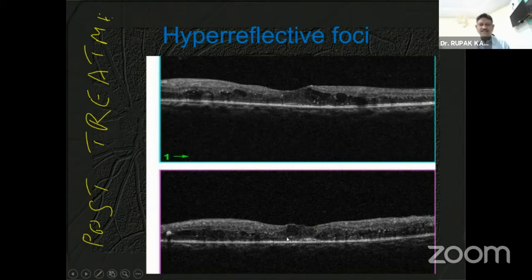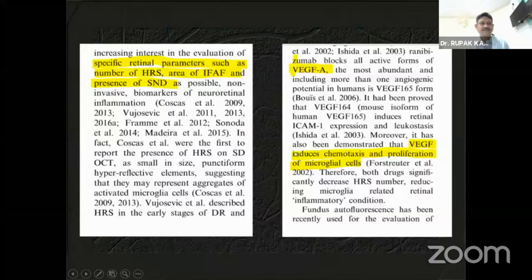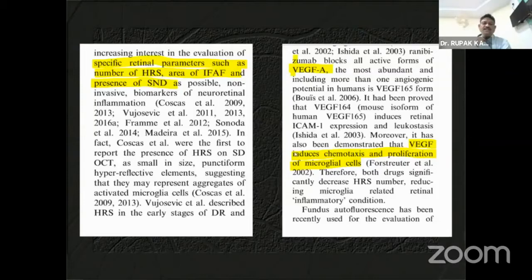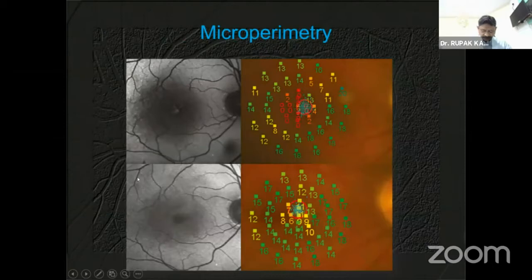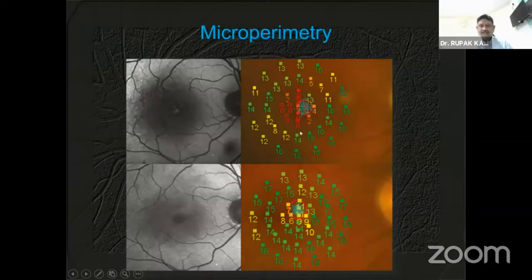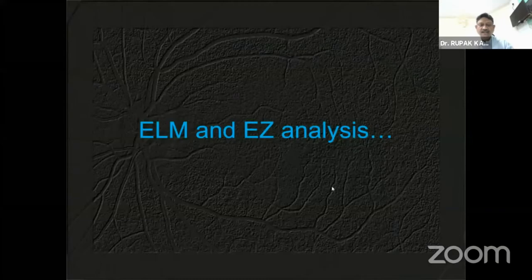This is post-treatment with the dexamethasone implant. You can see there is still some presence of hyperreflective spots, but they have been reduced from the previous image. There is also increased foveal autofluorescence area and the presence of some foveal fluid. This increased autofluorescence of the central area also decreases after treatment, and this is supported by microperimetry. The red area in the pretreatment microperimetry has been converted to yellow and green after treatment — an important documentation of post-treatment changes.